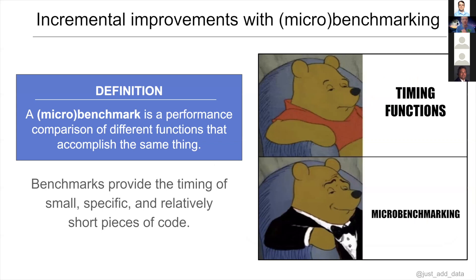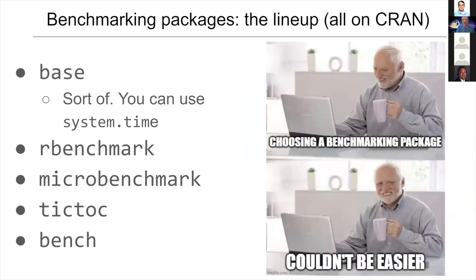It's called benchmarking, or micro-benchmarking in some contexts — it's kind of the same thing. Basically a benchmark is a performance comparison of different functions that accomplish the same thing. Benchmarks provide the timing of small, specific, and relatively short pieces of code. If you hear 'micro-benchmark,' it's just a fancy way of saying you're timing your functions — that's all it is.